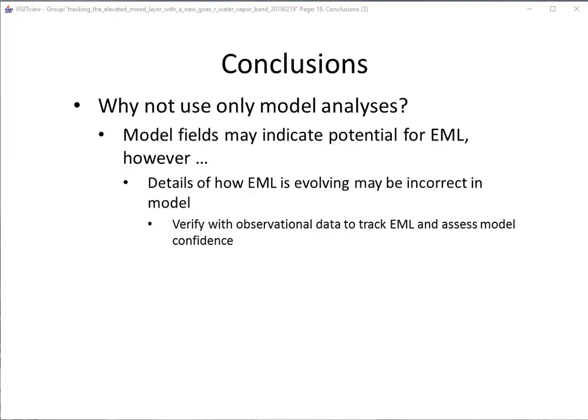One question you may have is: why not just use model analyses to track the EML? While model output typically informs you that the EML may be a factor even more than a day in advance, the details of how the EML is evolving can only be verified with observational data. Model output may be incorrect in the forecast of convection, which has a large influence on the EML due to its contribution of diabatic heating at mid levels. It's better to look at a blend of the 7.3 micron band from GOES-16, the ALPW product, and soundings to track details of the EML and see where convection may weaken it. This technique of verifying the models with observational data can increase situational awareness of the potential role of an EML on a given day.